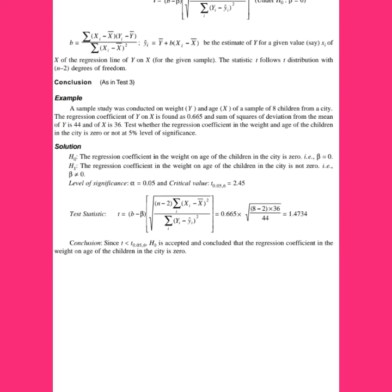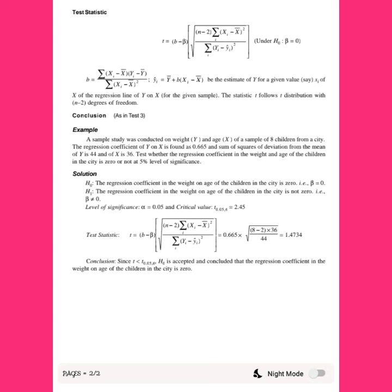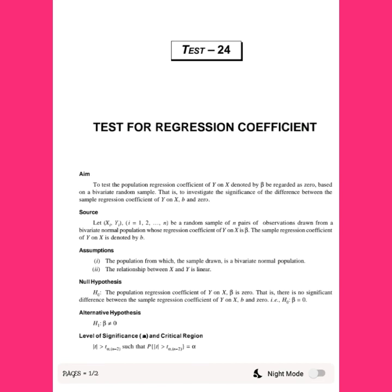The calculated t-value of 1.47 is less than the tabulated critical value of 2.45. Therefore, we do not reject the null hypothesis. We conclude that the regression coefficient of weight on age of children in the city is zero — meaning there is no significant regression relationship between weight and age.